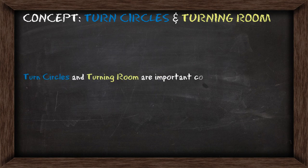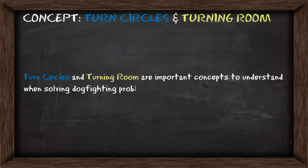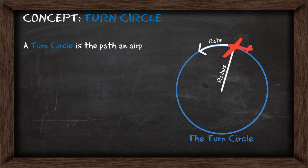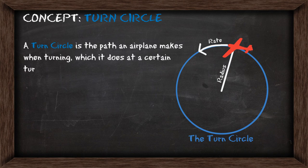Turn circles and turning room are two important concepts to understand when you're solving dogfighting problems using BFM, so we'll go through those now. The turn circle is the path an airplane makes when it's turning, and it will do this at a certain turn radius and turn rate.